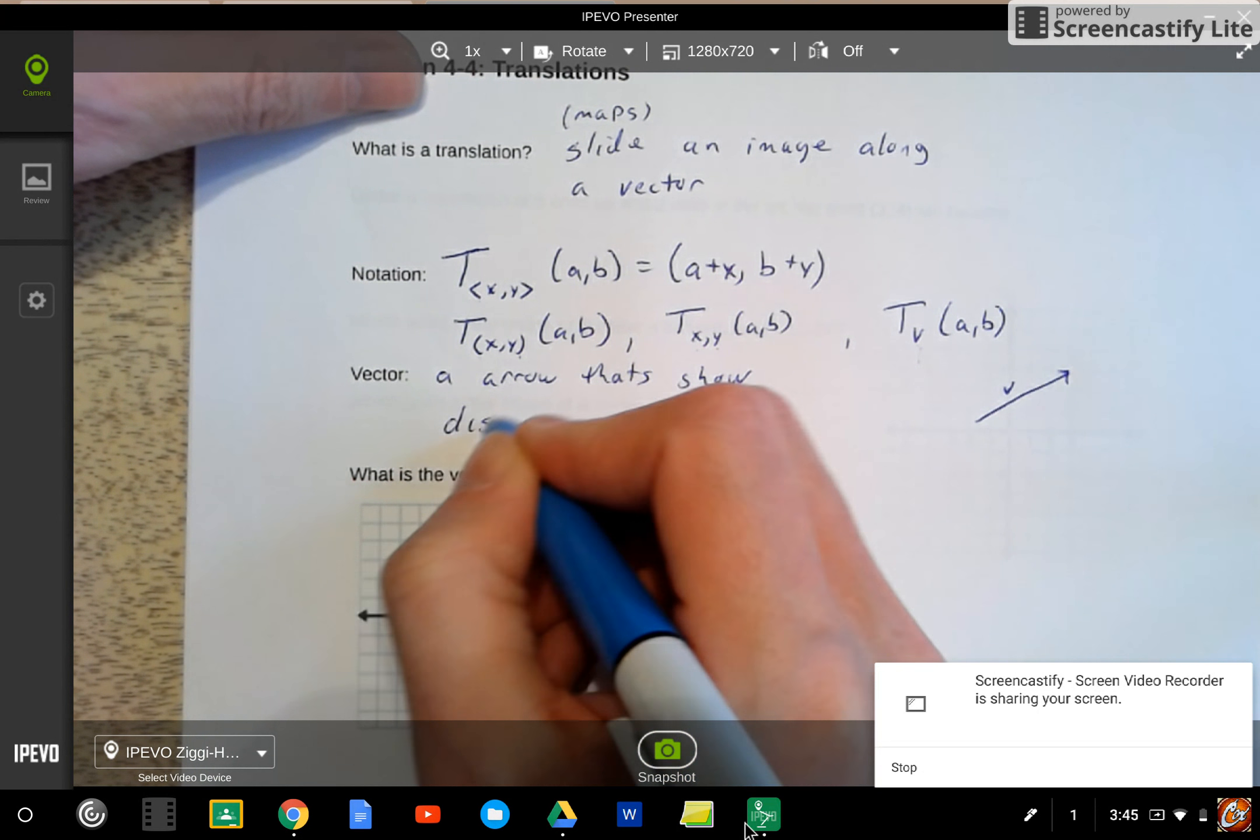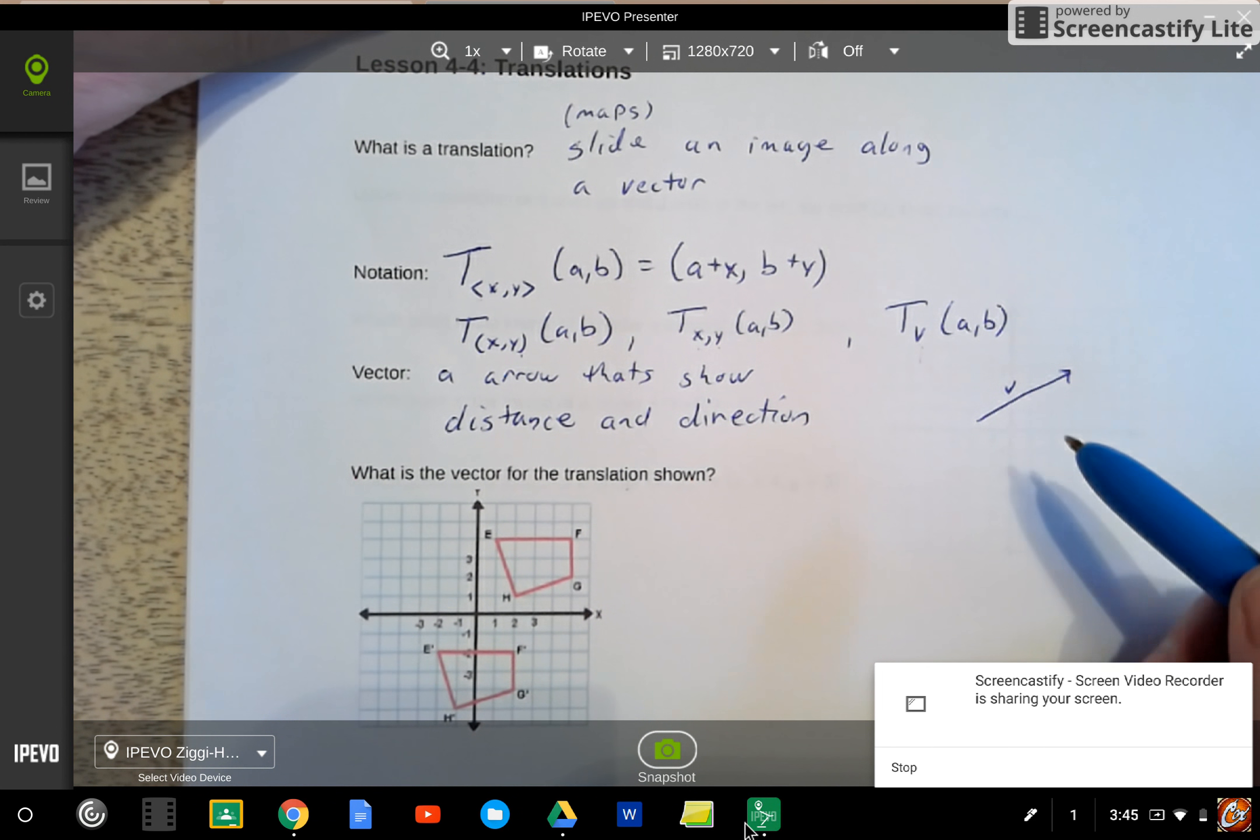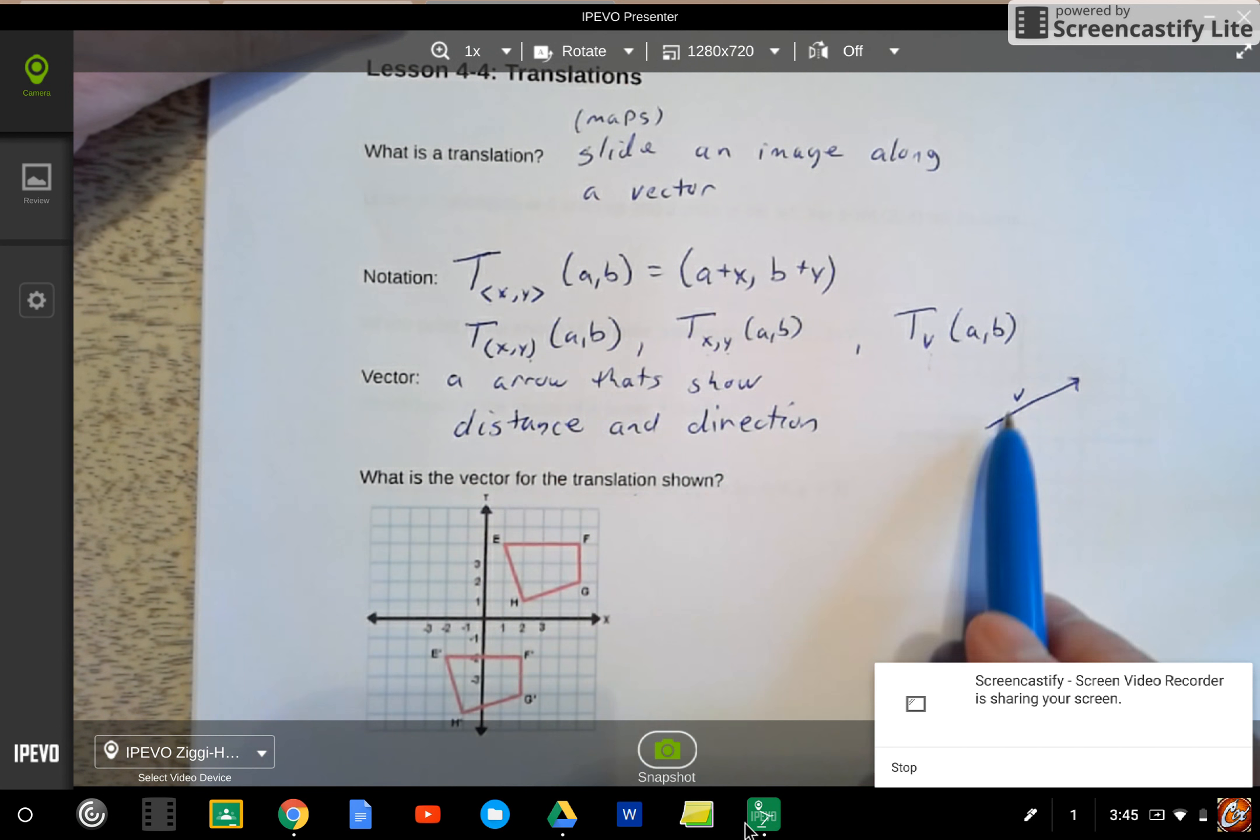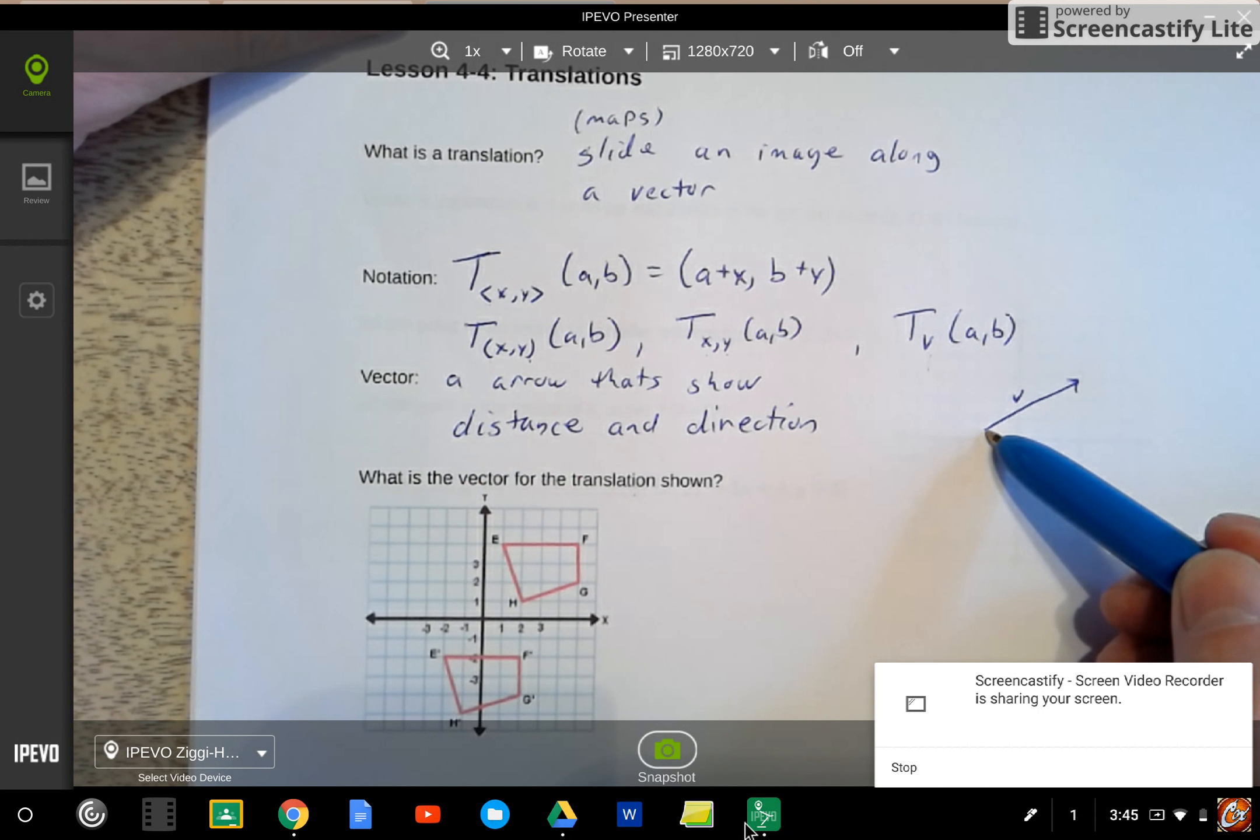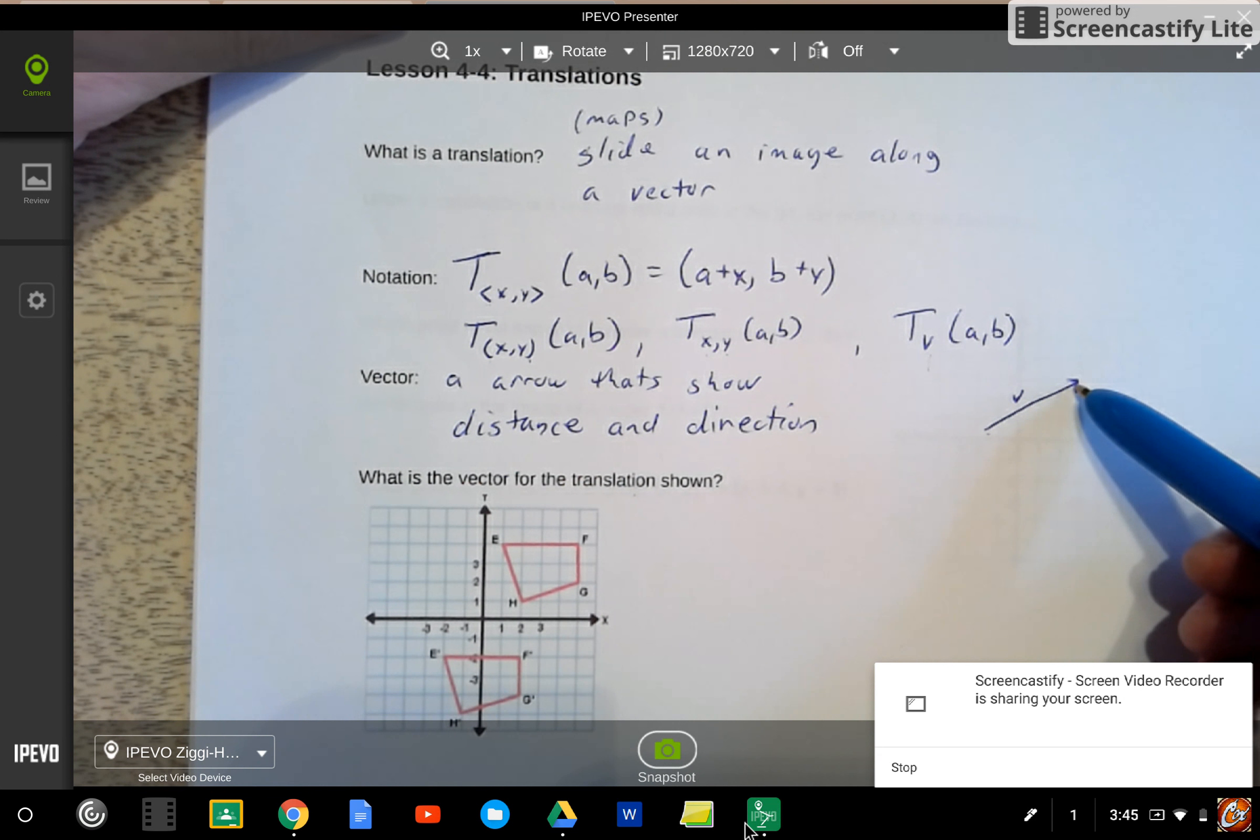So in your science class, you maybe use a vector in forces. You may be using a vector to show some kind of sunlight or electricity or something like that. But we use it in math to show where something starts, where it's going, so what direction it's going to, and where it ends. It almost looks like a ray, except remember that a ray keeps going on forever. A vector actually stops at the end point. So that's something that's different between a vector and a ray.